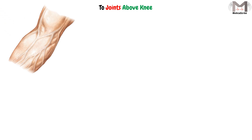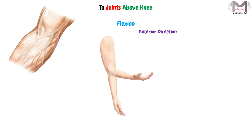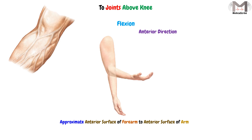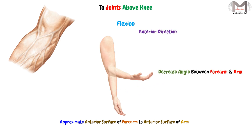In joints above the knee, like the elbow joint, flexion occurs in the anterior direction. During flexion of the elbow, we approximate the anterior surface of the forearm to the anterior surface of the arm, and this movement occurs in the anterior or forward direction.